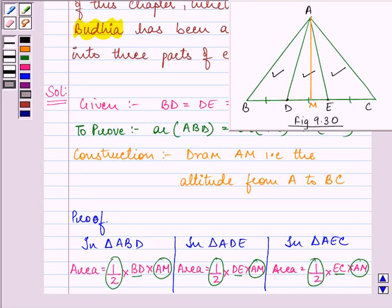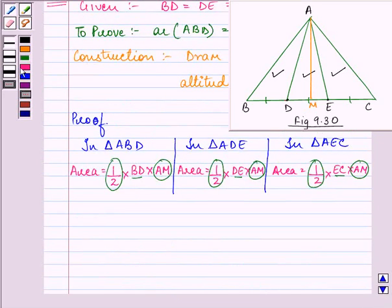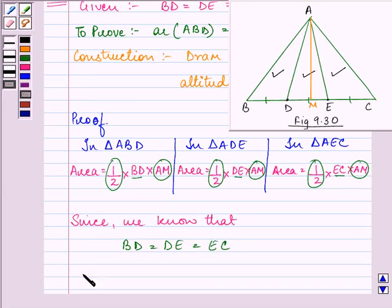We can write that since we know that BD is equal to DE is equal to EC, therefore, area of these three triangles will be equal to each other.